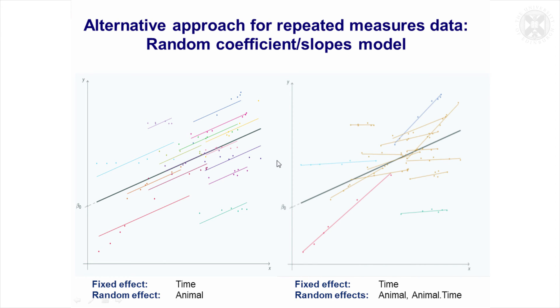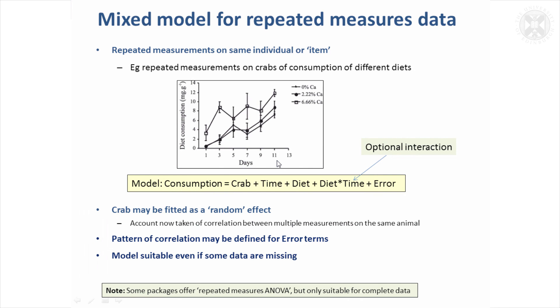Models are defined a bit differently then—time is defined as a continuous effect in the model rather than here where time would be defined as a category because there's fixed time points.